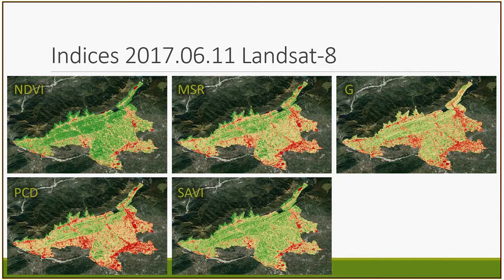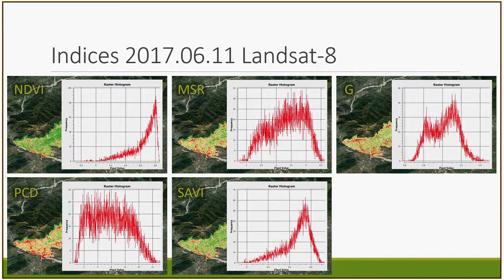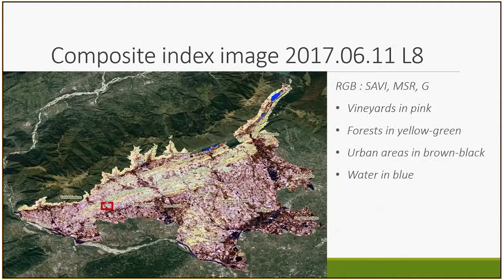I took year 2017 as a reference, as this is the latest supported by official figures. Here you see the five indices with higher values in green and lower values in red. I also analyzed the relative histograms, looking for interesting thresholds to use for clipping. I used those indices to produce a color composite image with the SAVI, MSR, and greenness combination as the best case. In this case, the vineyards pop up nicely in pink, forests are yellow-greenish, urban areas in brown and black, and water in blue.